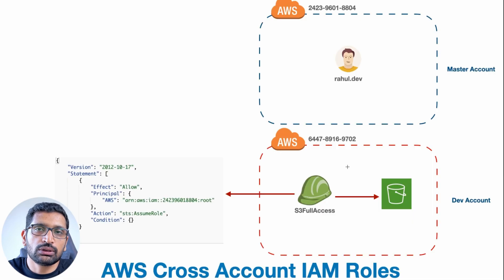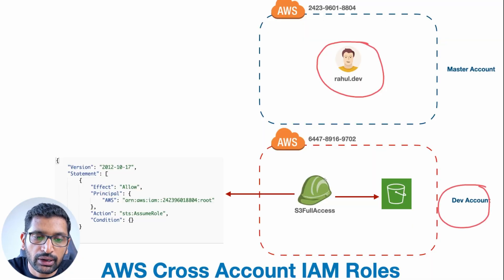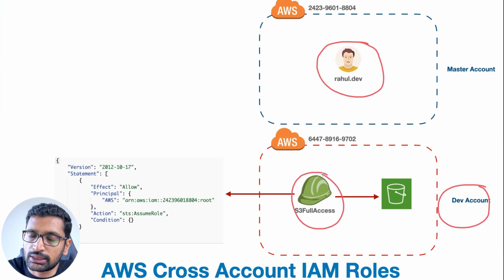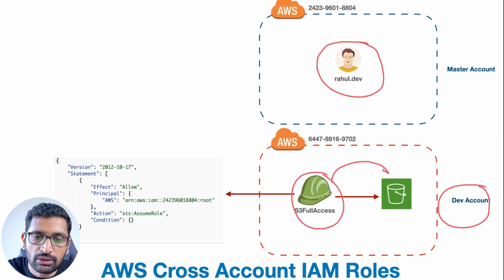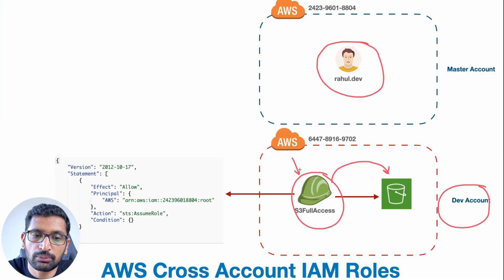Now, how are we going to simulate our scenario? In the master account we are going to create an IAM user called rahul.dev, and in our dev account we are going to create an IAM role called S3 Full Access. That role will give access to the S3 buckets present in the dev account, so if you have two or three S3 buckets you should be able to access all of them using this role.